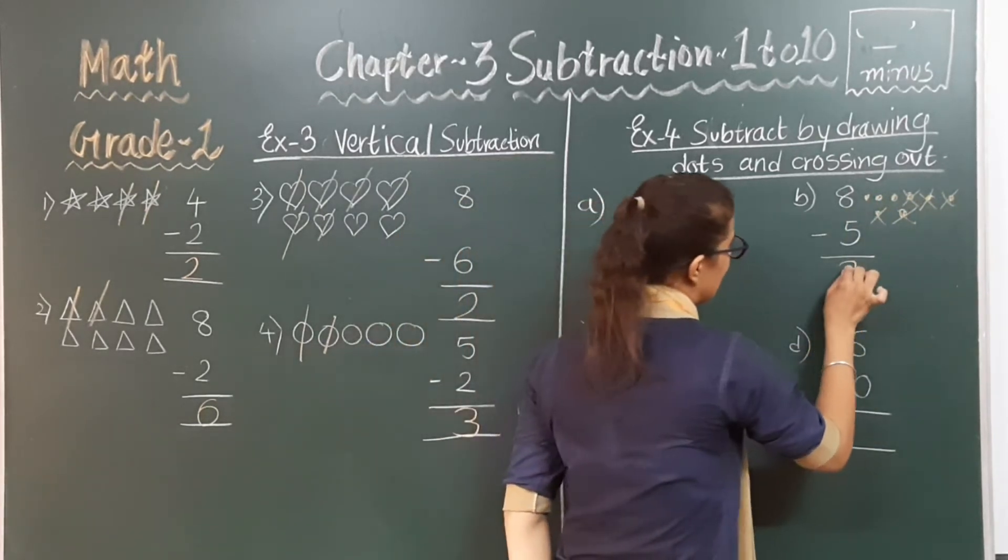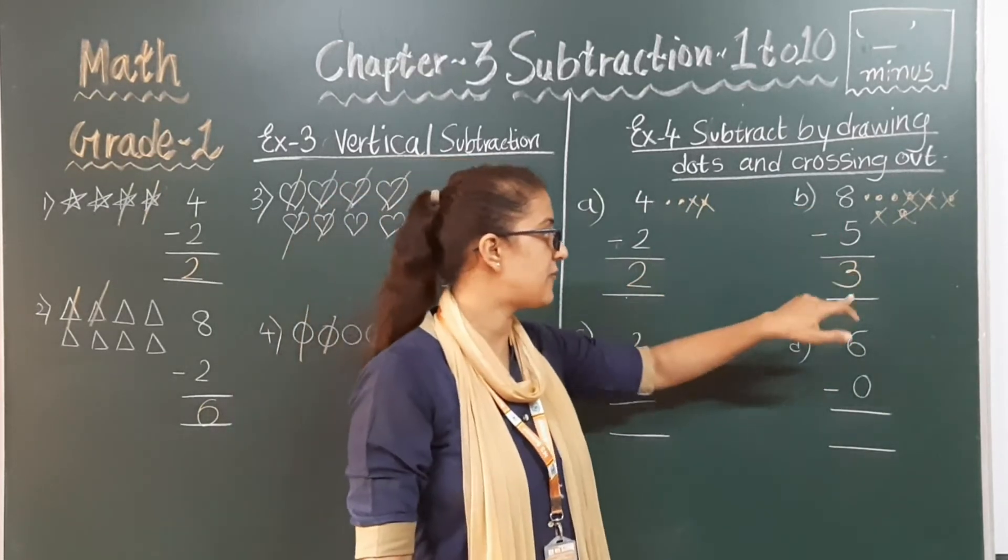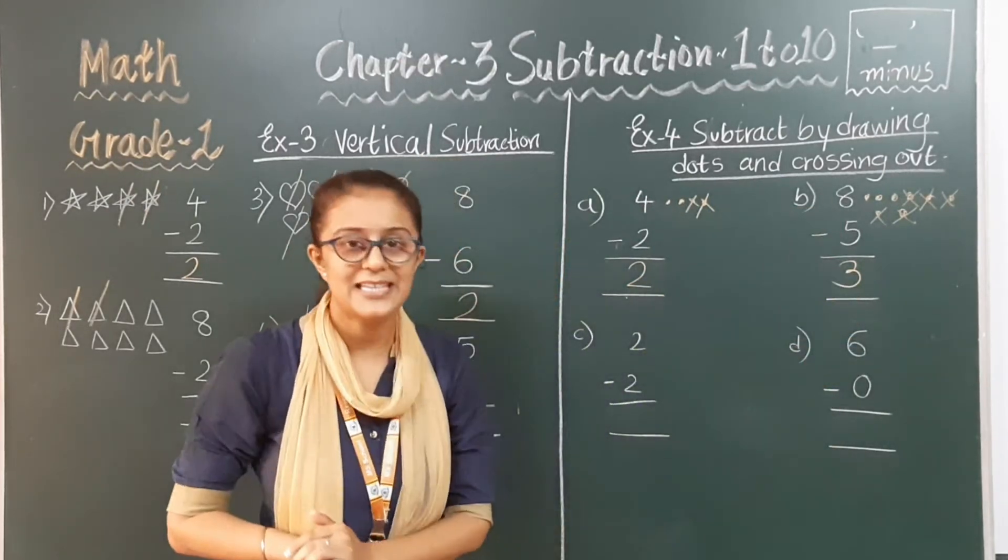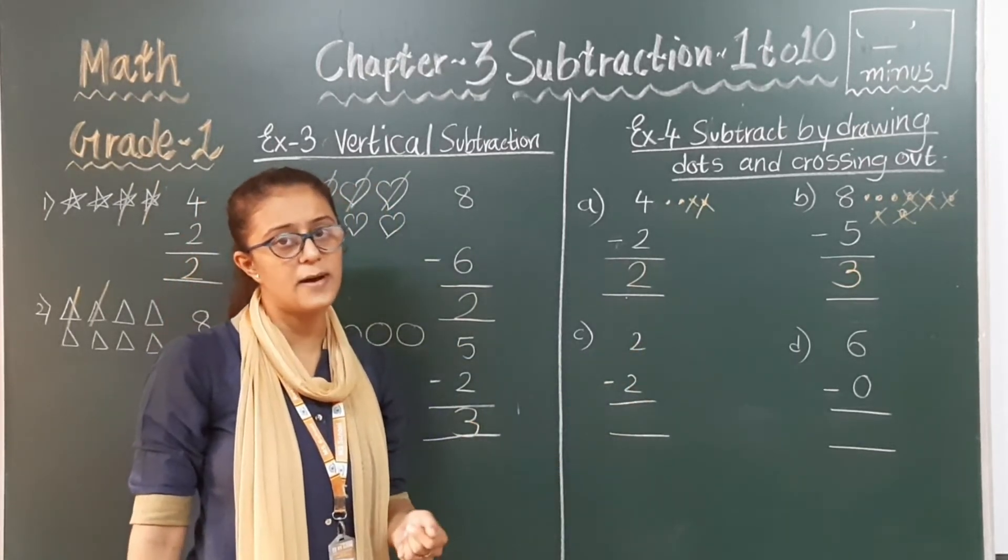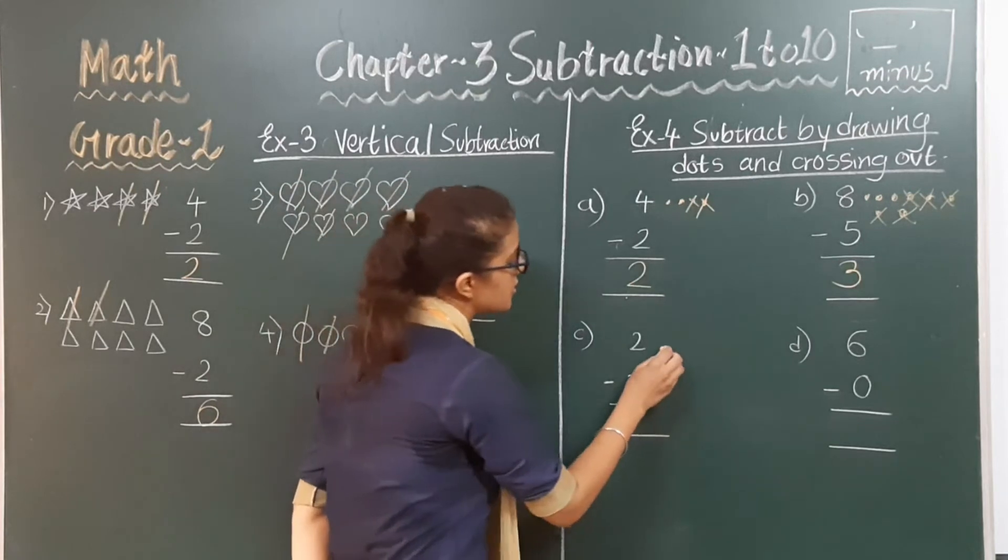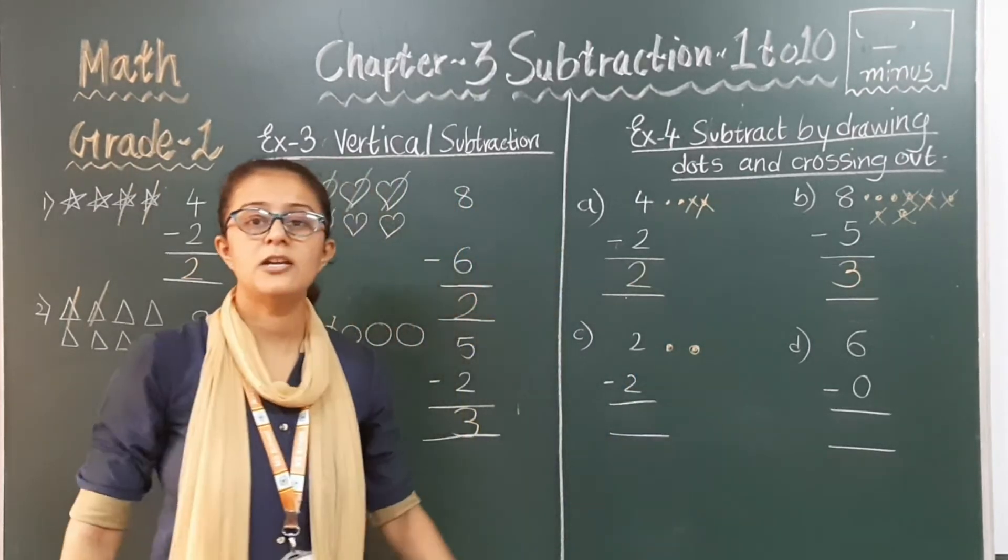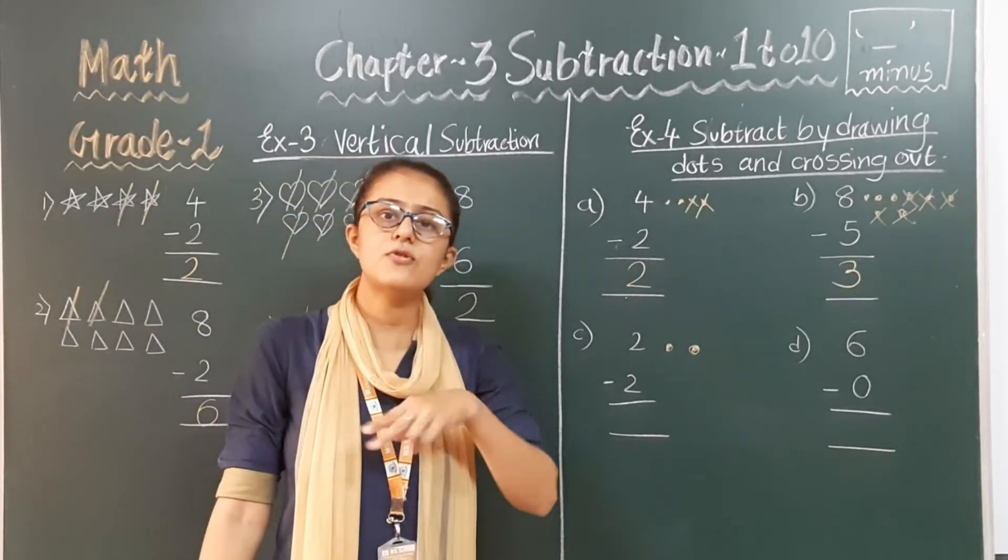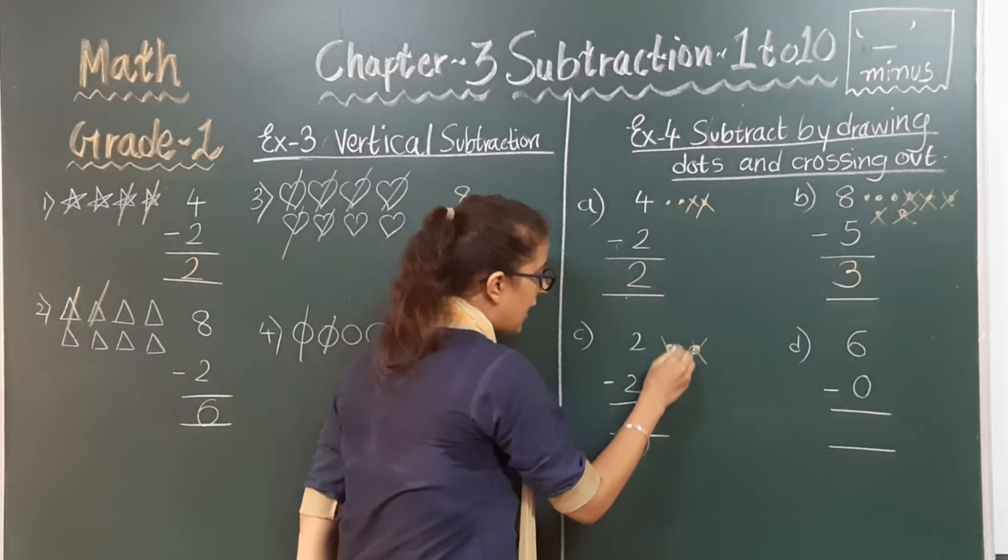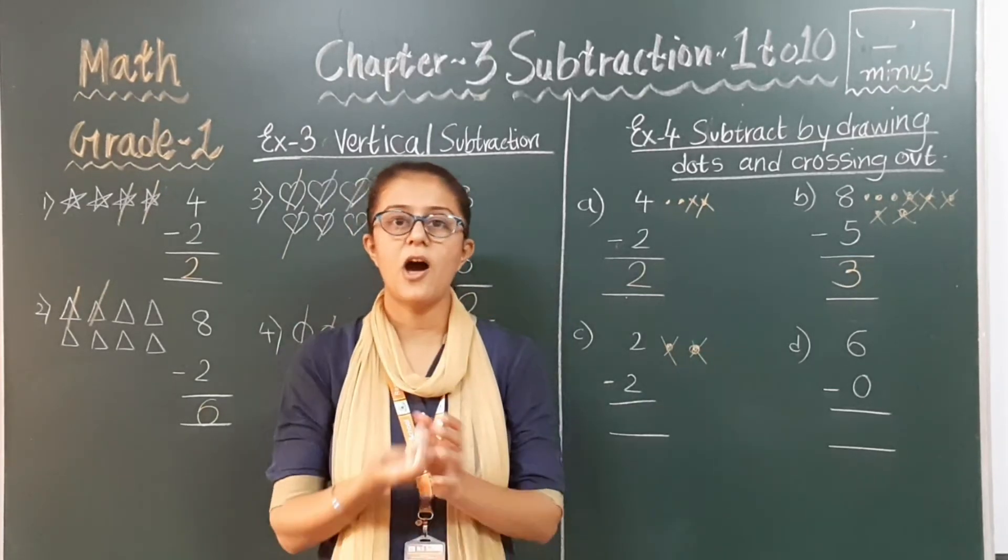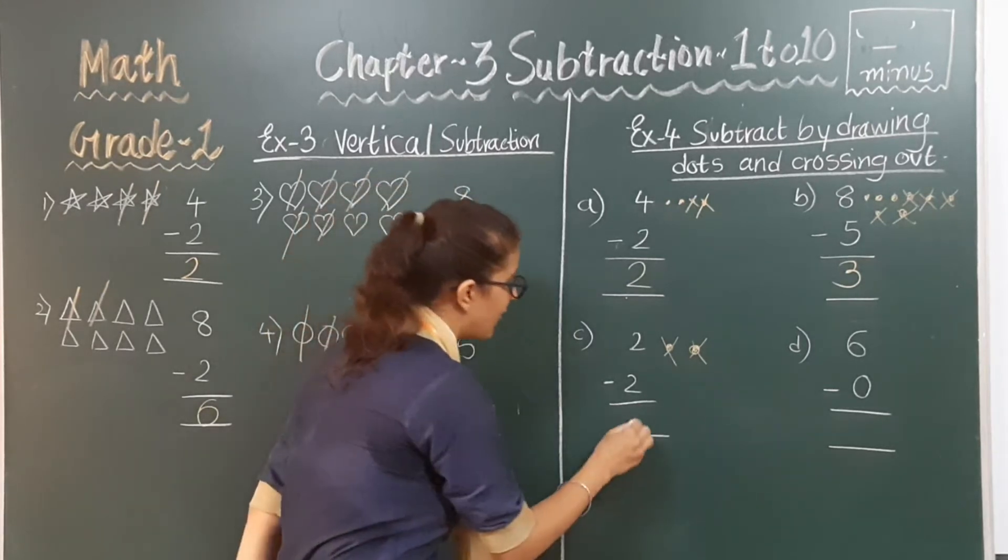Next. 2 minus 2 is equal to how much? Let's find out. So we have to make 2 dots here. Now from this 2 dots we have to minus 2 dots. Come on, do it. One and two. Now how much is left now? Nothing. So zero.